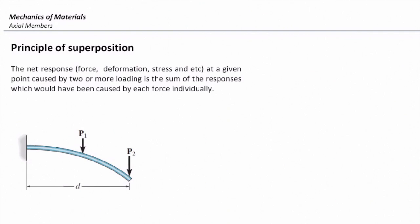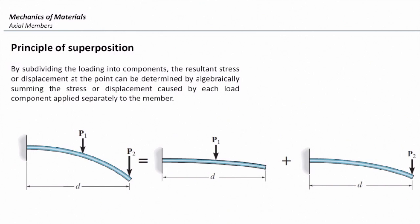That is the principle of superposition. It says the net response at a given point caused by two or more loads is the sum of the responses that would have been caused by each force individually. So if I have a structure subjected to two loads, I can split it into two parts, study the effect of P1 in the first and P2 in the second, then simply add the responses together to get the overall response in the original structure.